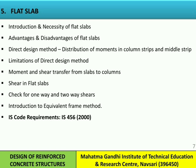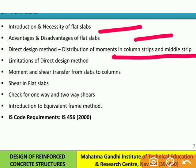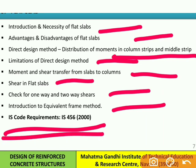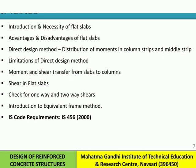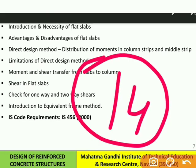The fifth chapter is flat slab. We study the introduction and necessity of flat slab, advantages and disadvantages, and the direct design method including distribution of moments in column strip and middle strip, and its limitations. We also study moment and shear transfer from slab to column, shear in flat slab, one-way and two-way shear checks, and an introduction to the equivalent frame method. We then design a typical flat slab using code IS 456:2000. In the exam, 7 marks for theory and 7 marks for the example — total 14 marks.